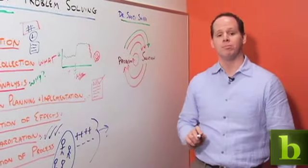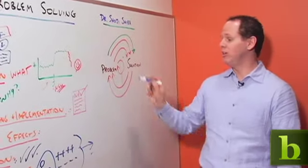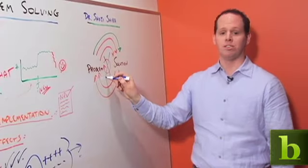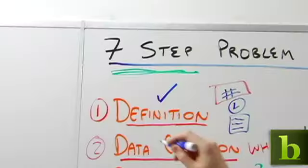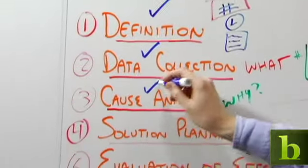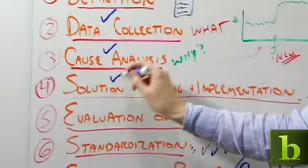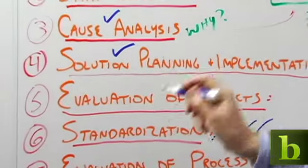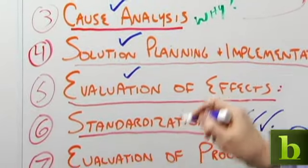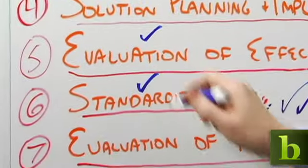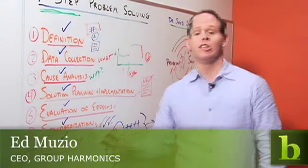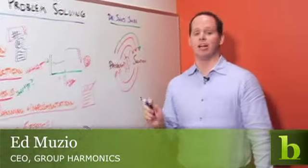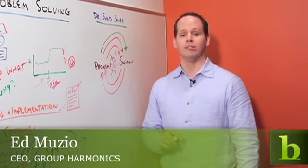So the next time you have a problem to solve, if it's a complex problem, don't get caught in the loop where every solution is a new problem. Instead, take the time to do seven-step problem solving. First define the problem, collect your data, and analyze the cause. That way you make sure you solve the right problem. After you've done your solution, evaluate its effects and if it worked, standardize as widely as you can and evaluate your process to learn for next time. You'll be more likely to come up with a solution that helps the company, helps the problem, and solves it once and for all.